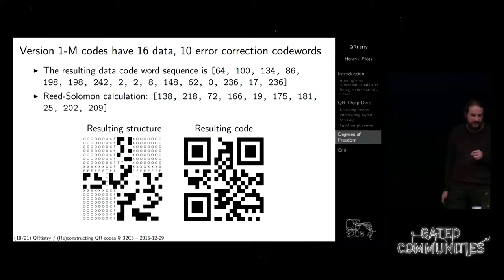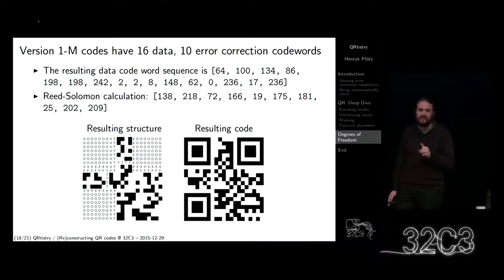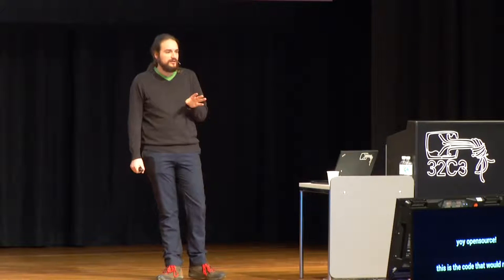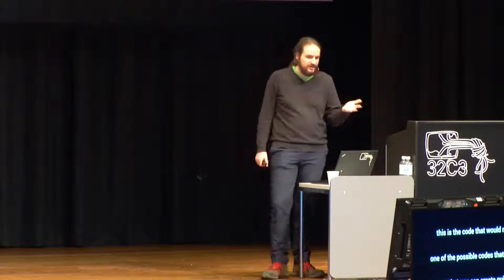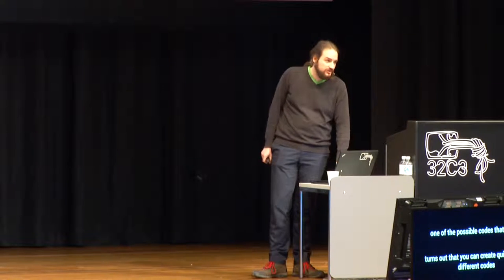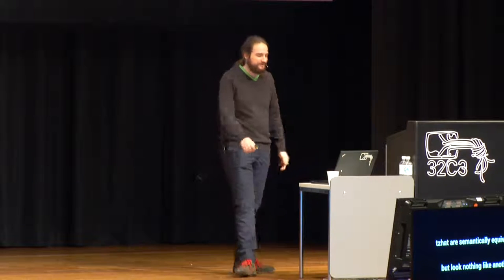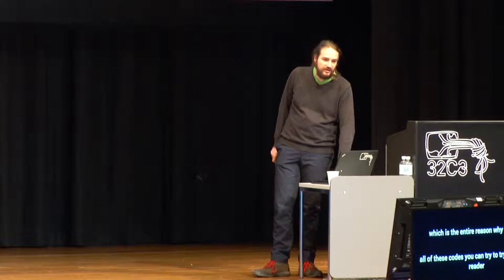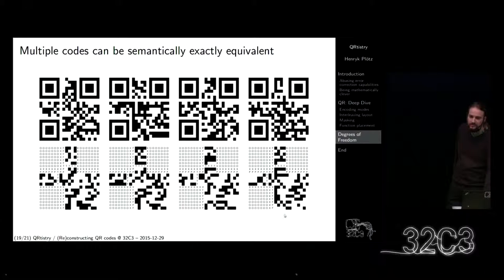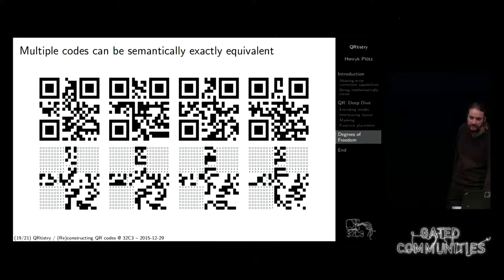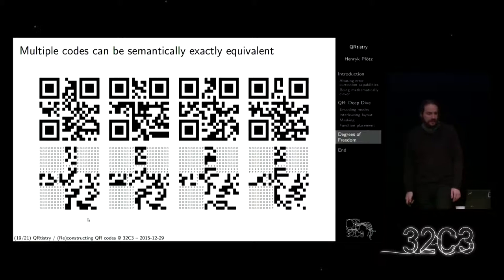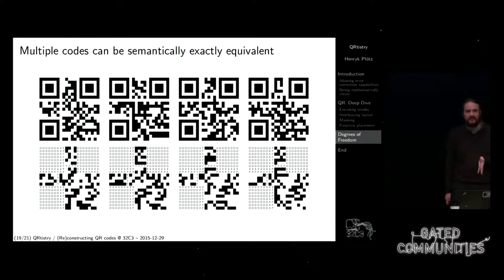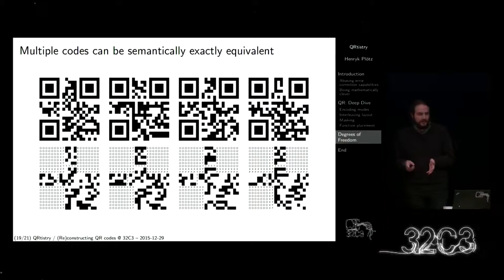Es stellt sich heraus, dass man ganz viele verschiedene Codes generieren kann, die semantisch identisch sind, aber komplett anders aussehen. Welches der komplette Grund ist, warum ich hier bin. Jeder dieser Codes gibt dieselbe Folge zurück — also 'Hello 32C3'. Aber sie sehen überhaupt nicht ähnlich aus in der enkudierten Version, und sie sehen auch nicht ähnlich aus in der Debug-Version. Das ist einfach ohne die Maskierung. Jetzt, wenn man alle diese Elemente kontrollieren könnte, könnte man einen Code so aussehen lassen, wie man möchte.